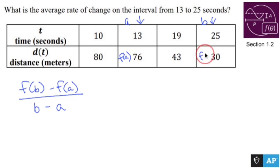and f(b). Now it's just a matter of plugging stuff in: 30 minus 76, f(b) minus f(a), over b, 25, minus a, 13.